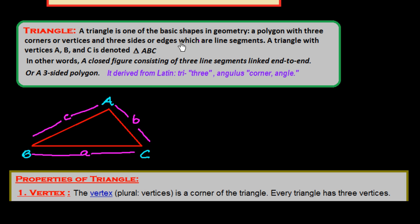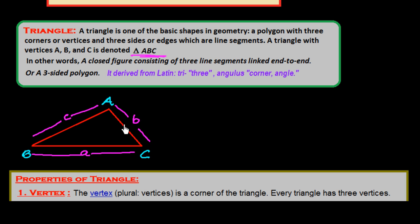The definition: a polygon with three corners — vertices A, B, C — and three sides AB, BC, and AC, which are line segments. This triangle is called triangle ABC. In other words, a closed figure consisting of three line segments linked end to end: AB, then BC, and CA are linked end to end. Or it is a three-sided polygon.